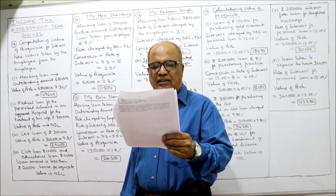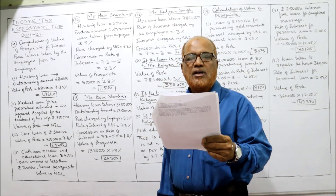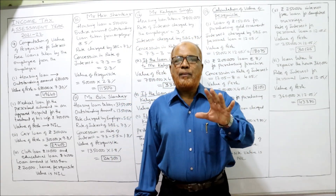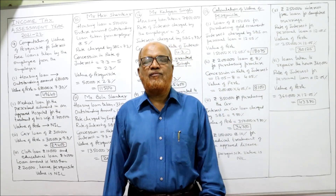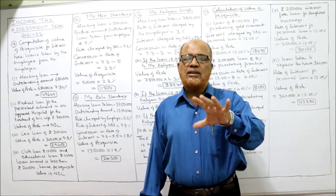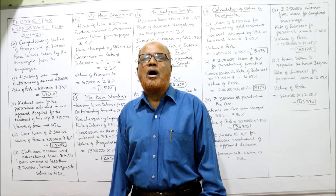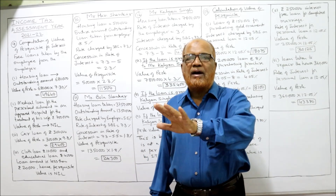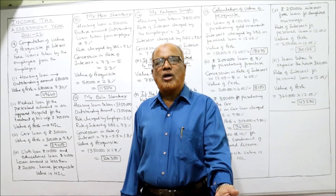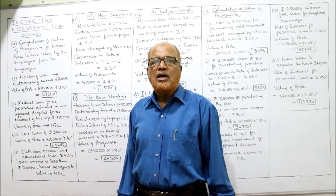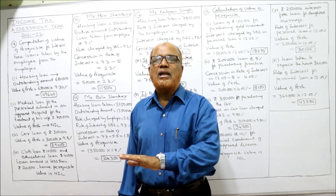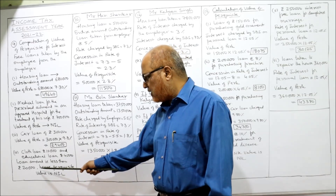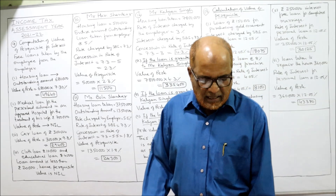Case 4: he availed a cloth loan of ₹10,000 and an educational loan of ₹4,000. The value of the perquisite is nil for petty loans taken from the employer. A petty loan is when the loan amount or the aggregate of all loans comes to ₹20,000 or less. Here ₹10,000 + ₹4,000 = ₹14,000, which is less than ₹20,000 — it is a petty loan, so the value of the perquisite is nil. That's the ninth problem.